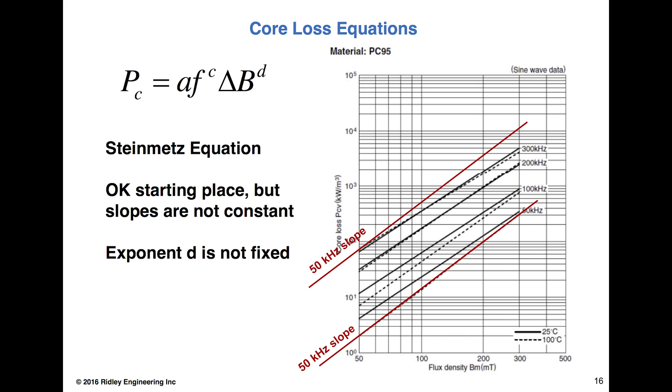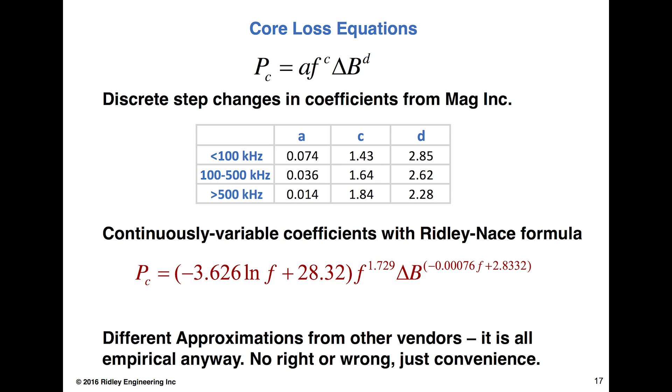We have to do better than that. There are several different ways to do it. One is to look at the core loss coefficients that we have from Mag Inc., for example. They give three different sets of coefficients: one for 100 kilohertz, another one for 100-500 kilohertz, and then another one for 500 kilohertz. So you've got to discretely jump your values of coefficients. If you look at other vendors, they'll give different jump points. There's no standards, so comparing cores is very difficult to do.